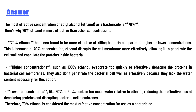70% ethanol has been found to be more effective at killing bacteria compared to higher or lower concentrations. This is because at 70% concentration, ethanol disrupts the cell membrane more effectively, allowing it to penetrate the cell wall and coagulate the proteins inside bacteria.